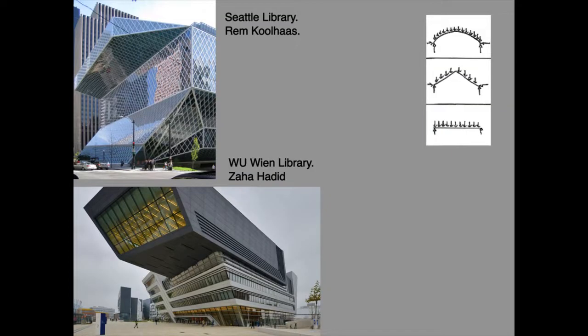Looking at two buildings by Rem Koolhaas and Zaha Hadid, it can be seen immediately that these are not form active shapes. They are at best semi-form active, although the Hadid building in the lower photograph is almost certainly non-form active. So it may be concluded just by looking at these buildings that the structures involved will contain substantial amounts of material. These buildings will not produce efficient structures and will not have low carbon footprints.